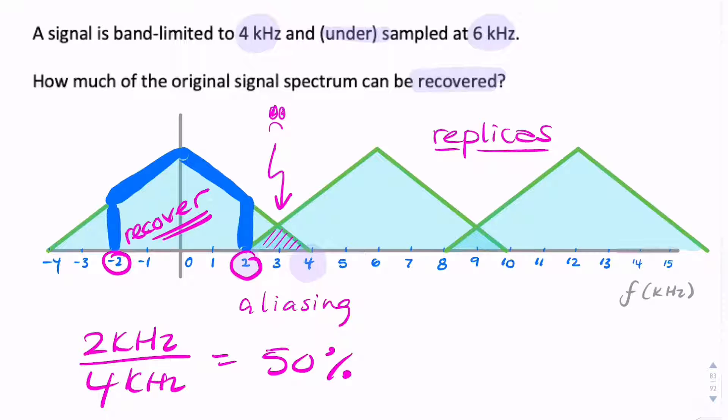So we can still somehow salvage some of our signal. So what we would use would be a low-pass filter. And we call such a filter an anti-aliasing filter. It hasn't prevented aliasing, but it's allowed us to recover some of our signal. So an anti-aliasing filter takes an aliased signal and recovers part of it.